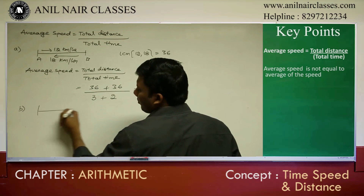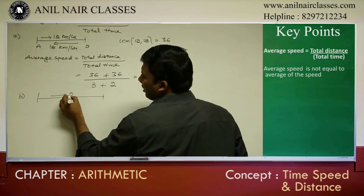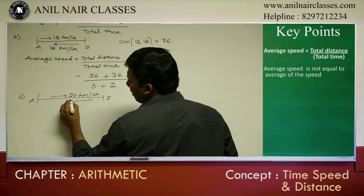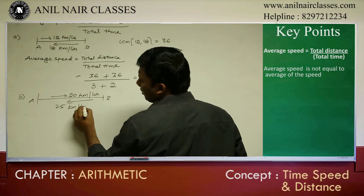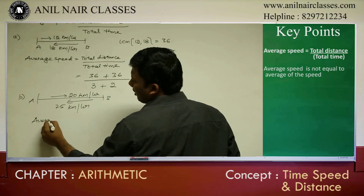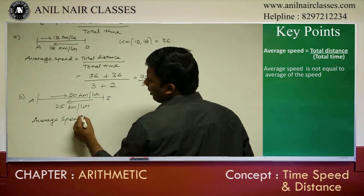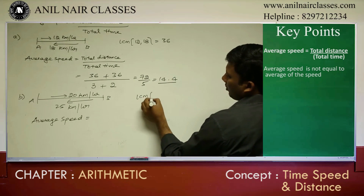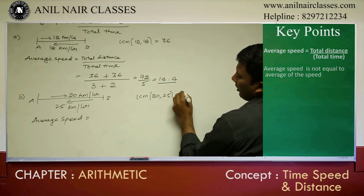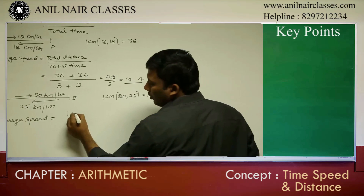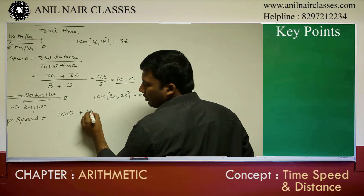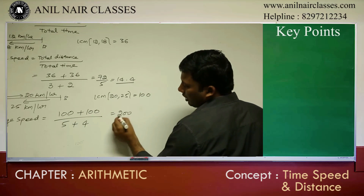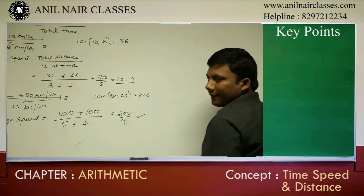Another question: a person travels from A to B at 20 kilometers per hour and comes back from B to A at 25 kilometers per hour. Find the average speed. Average speed equals total distance by total time. LCM of 20 and 25 is 100. So 100 going from A to B, 100 coming from B to A. While going, 5 hours; while coming, 4 hours. So total distance is 200.